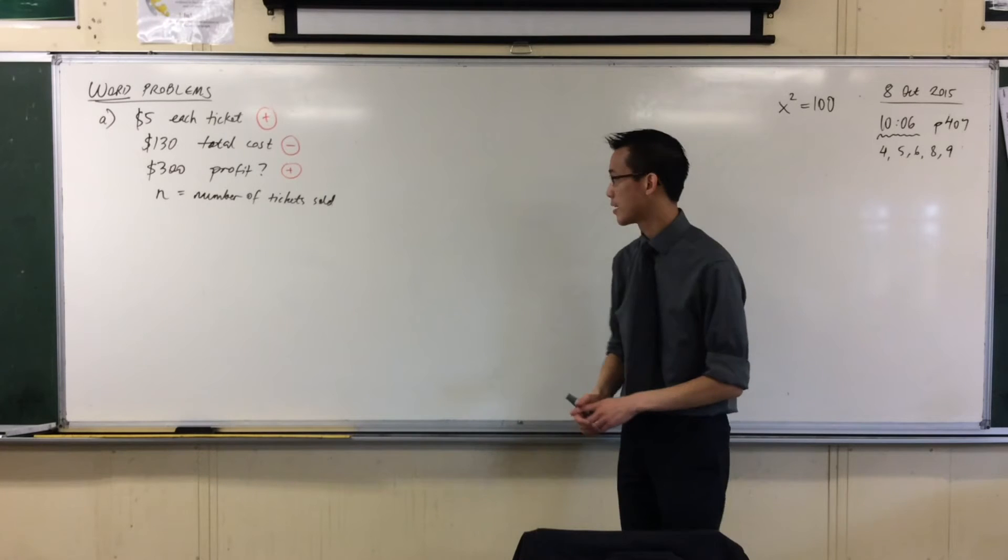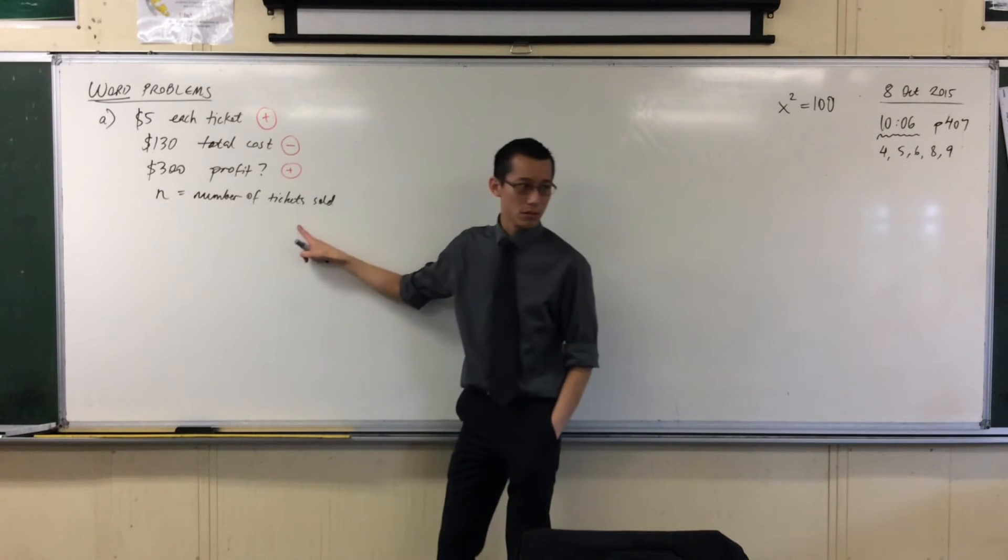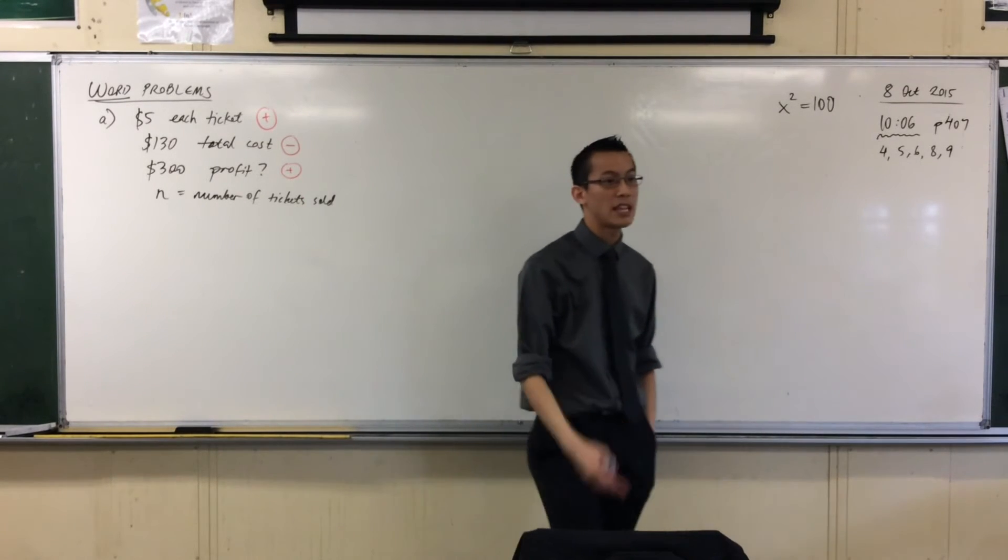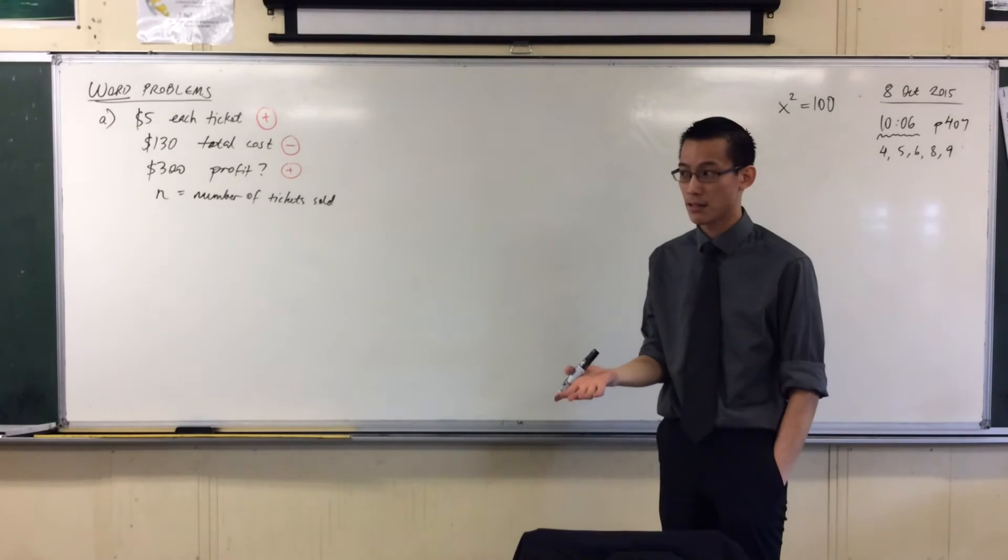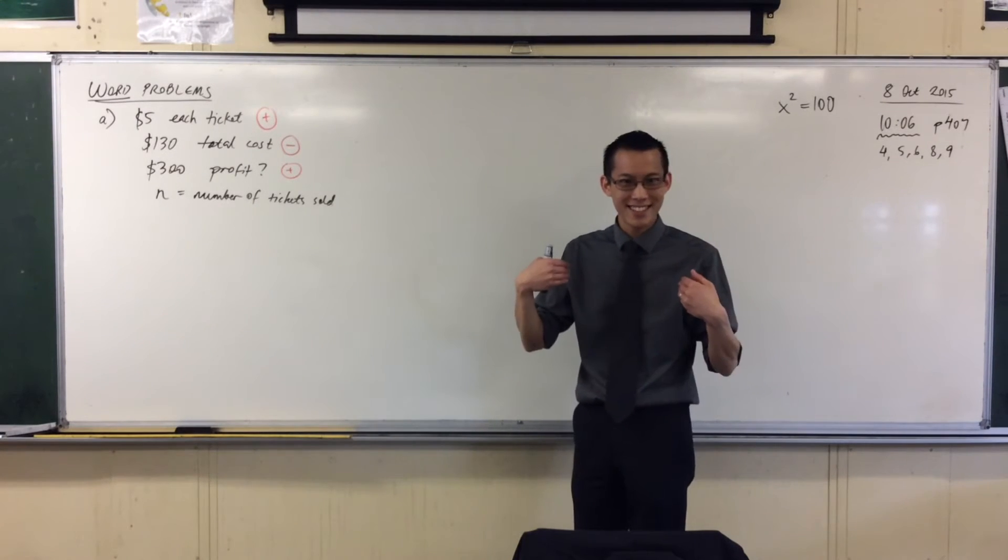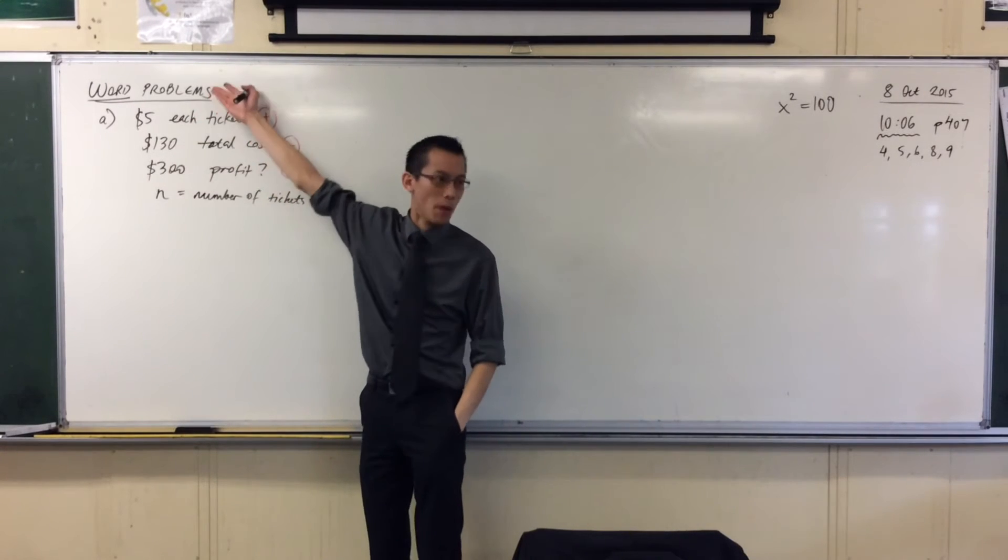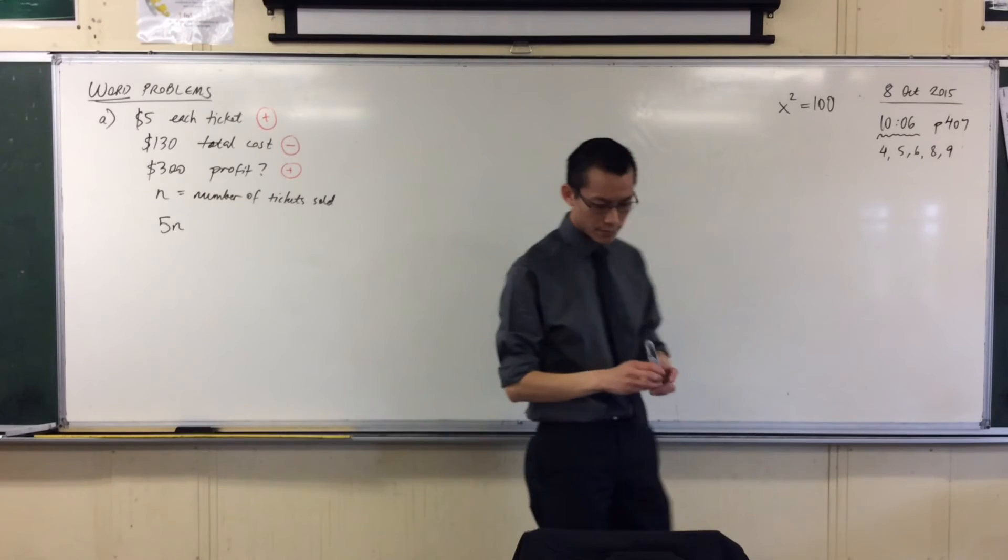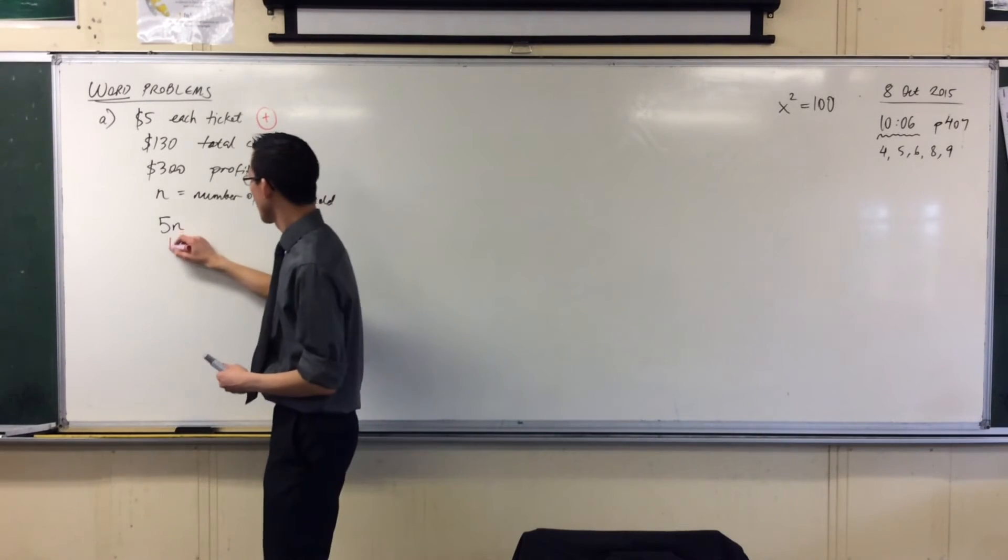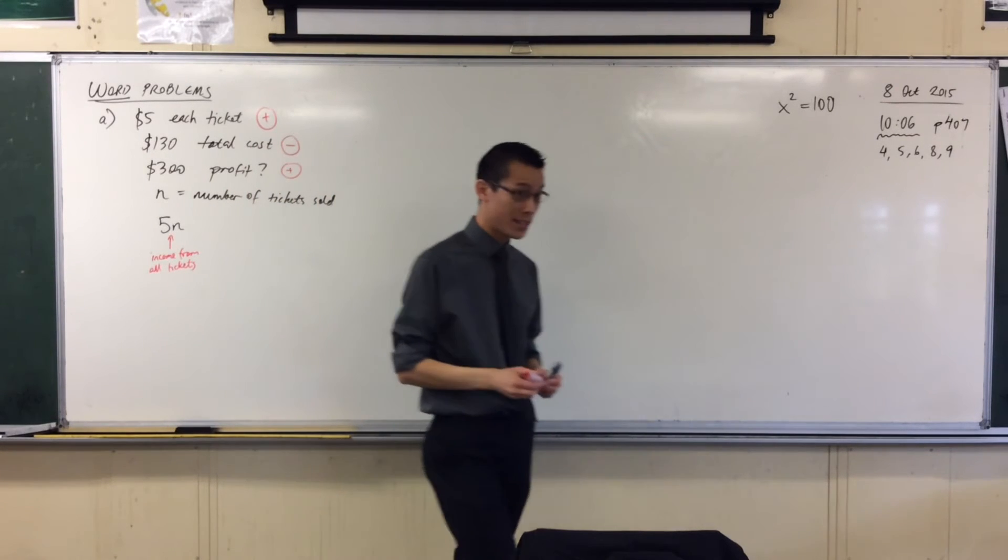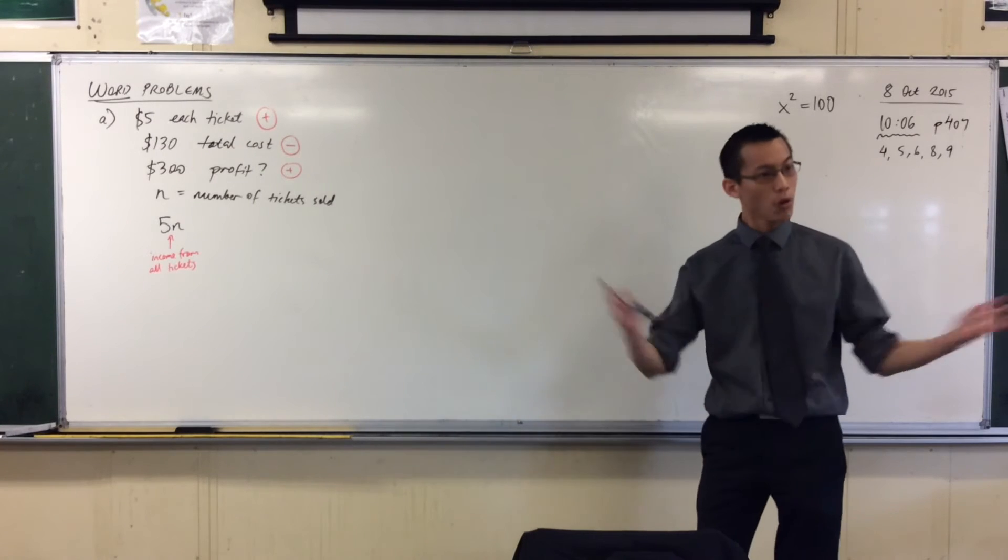Now we're ready to form our equation. If N is the number of tickets sold, then how much money will come in in total? For instance, if I sold 10 tickets, how much actual money, like what dollar value would I get? 50 bucks in. If I sold 100 tickets? $500 in. So what I'm doing is I'm taking the number of tickets and I'm just multiplying it by the cost of each ticket. So I'm going to write down 5N. What that is, is income from all tickets.